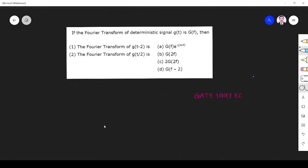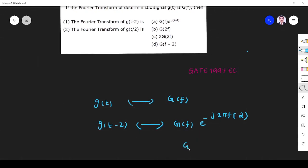Simply, it is a property-based question. So g(t) has Fourier transform G(f). What is the Fourier transform of g(t-2)? It is the time-shifting property of Fourier transform. It is given by G(f) times e to the power minus j2πf times 2, so it will be G(f)e to the power minus j4πf. So it's a time-shifting property, a direct property.